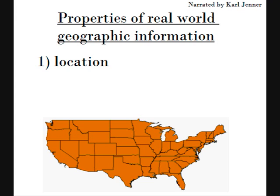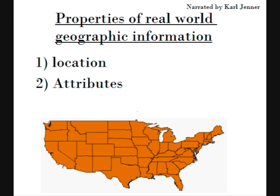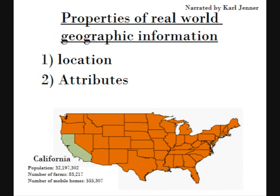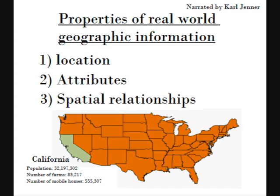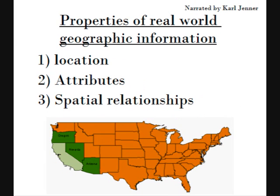Geographic information also includes attributes, which provide information about the location. For example, California, as a geographic object, has a number of attributes associated with it, including the population, the number of farms and the number of mobile homes. The final property of real world geographic information is the spatial relationships associated with an object. Spatial relationships include such things as the shape of an object or the relationship between the object and other objects. As we see here, California is a long and narrow state that is bordered by Oregon, Nevada and Arizona.